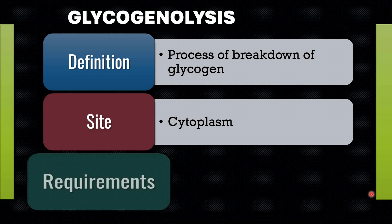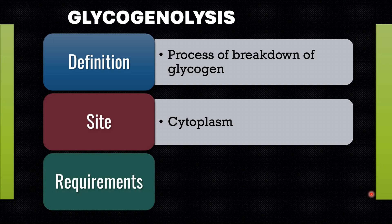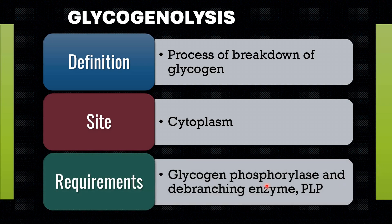The essential requirements for Glycogenolysis are the rate-limiting enzyme Glycogen phosphorylase, the de-branching enzyme known as D-enzyme, and pyridoxal phosphate. Let us now study the process of breakdown of glycogen, or Glycogenolysis.